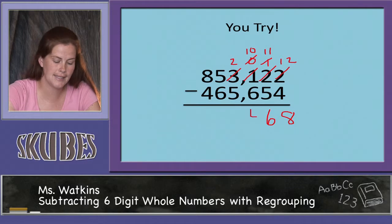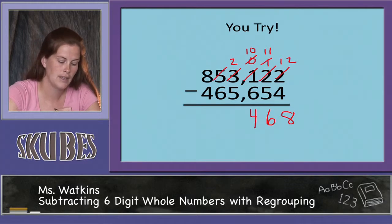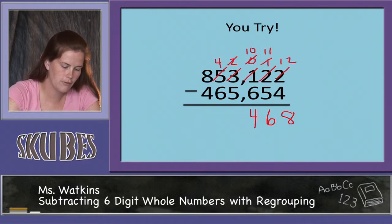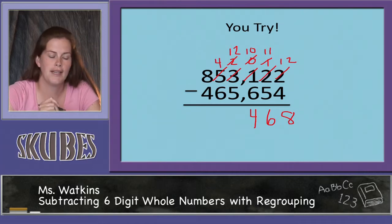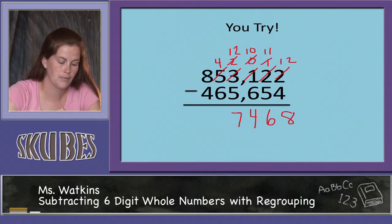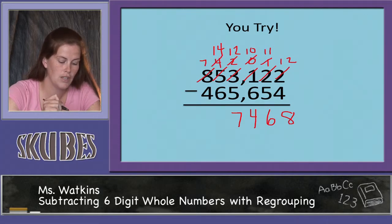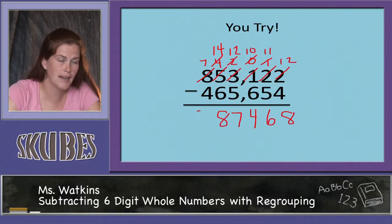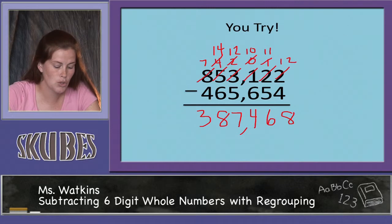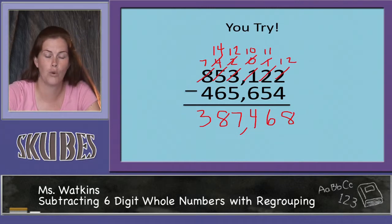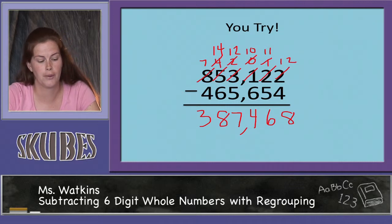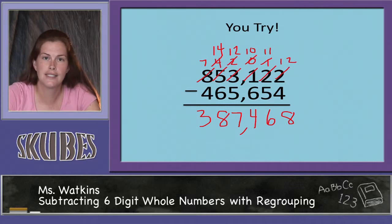Regroup again: this 5 becomes a 4 and this 2 becomes a 12. 12 minus 5 equals 7. One last time: this 8 becomes a 7 and this 4 becomes a 14. 14 minus 6 equals 8, and 7 minus 4 equals 3. So our answer is 387,468. As you can see, there's a lot of room for error here, so make sure you check your work. This concludes our lesson on subtracting six-digit whole numbers with regrouping.